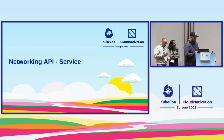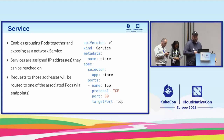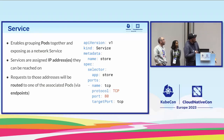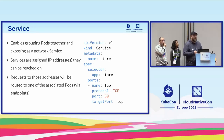First, we'll talk about service. This is commonly one of the first APIs somebody will run into, like when they set up a deployment. You might first have gotten a service for your deployment with kubectl expose. It enables grouping pods together and exposing them as a networking service. They're given an IP address that can be reached on, and requests can be routed to one of the associated endpoints.